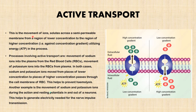Active transport is the movement of solutes across a semi-permeable membrane from a region of lower concentration to the region of higher concentration — that is, movement against the concentration gradient — utilizing energy in the form of ATP (adenosine triphosphate). Processes involving active transport include the movement of sodium ions into the plasma from red blood cells, and the movement of potassium ions from the red blood cells into plasma. In both cases, sodium and potassium ions move from places of lower concentration to places of higher concentration through the cell membrane of red blood cells. This helps to prevent hemolysis.